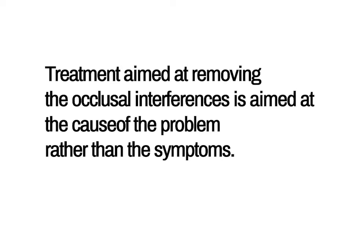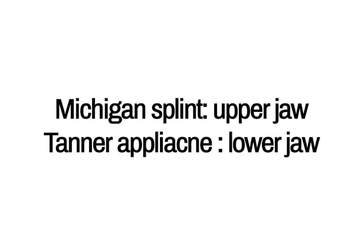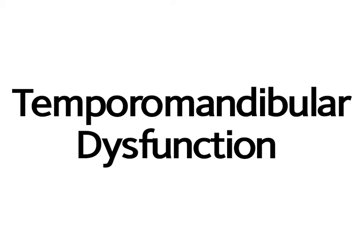Occlusal interferences are not always easy to detect clinically because of the conditioned reflexes that avoid the contacts on the occlusal interference. A simple way to detect whether alteration of occlusion is likely to reduce the symptoms of mandibular dysfunction is to provide a hard acrylic bite plane covering all the surfaces of the jaw, sometimes called a Michigan splint when made for the upper jaw, and a Tanner appliance when for the lower jaw. If the symptoms improve after a few weeks of wearing the appliance at night or all day if tolerated, this is a clear indication that the occlusion has something to do with the symptoms.